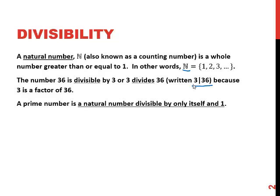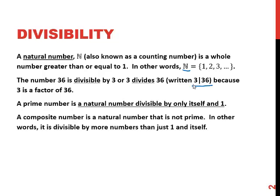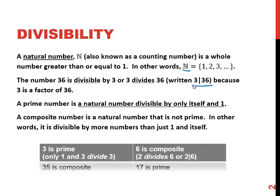Prime numbers are natural numbers that are divisible only by themselves and 1. A composite number is a natural number that is not prime. In other words, it's divisible by more numbers than just 1 and itself. So looking at a few examples, 3 is prime because only 1 and 3 divide it. 6 is composite because 2 divides 6. 3 also divides 6, but once we've found one number that goes into it we know it's composite. 35 is composite because 1 and 35 divide 35 but 5 and 7 also do, and 17 is prime because only 1 and 17 divide 17.